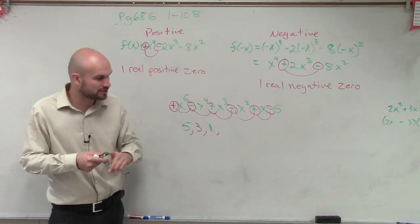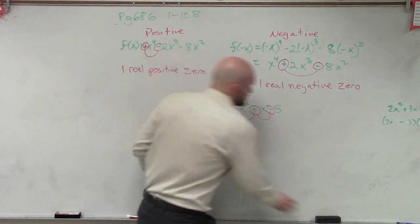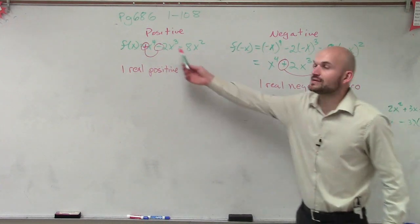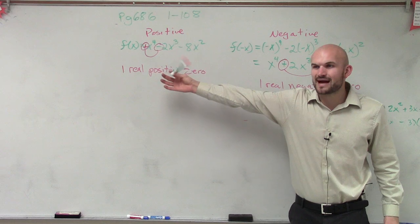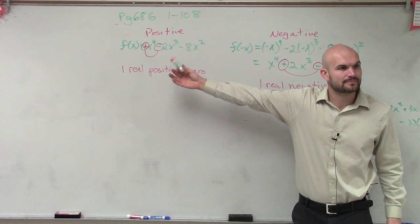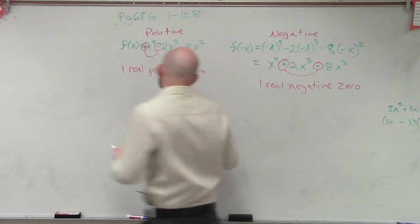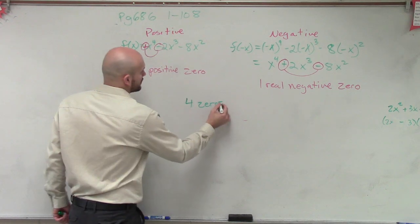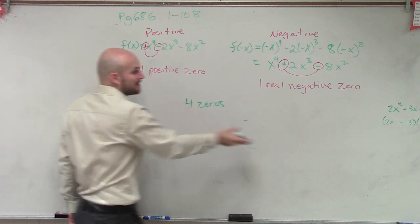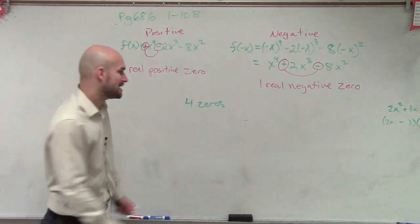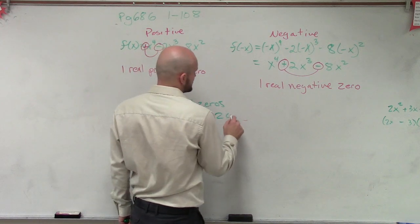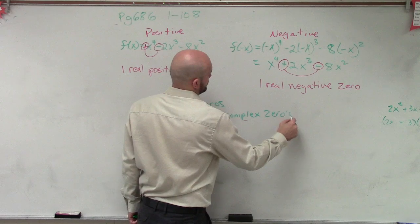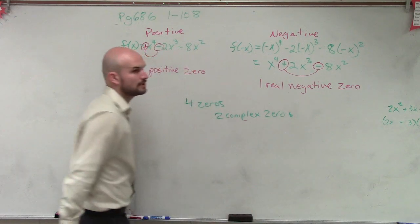Now let's just go back and do a quick little review as well. So ladies and gentlemen, if we look at the degrees of our function, or the degree of this function, we see our degrees to the fourth power. So what's the maximum number of zeros we can have? Four. So if there's four zeros, we know we're going to have one positive, and we know we're going to have one negative. So you have to have two complex zeros.